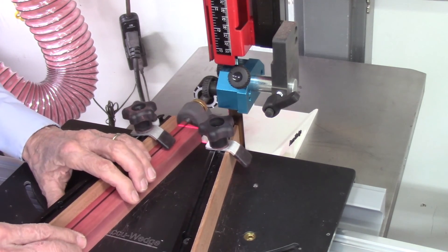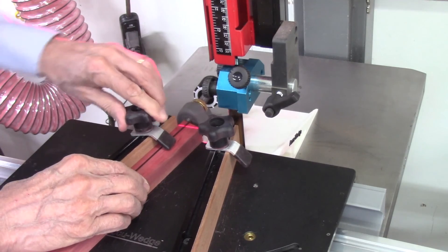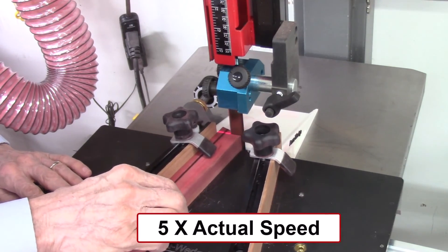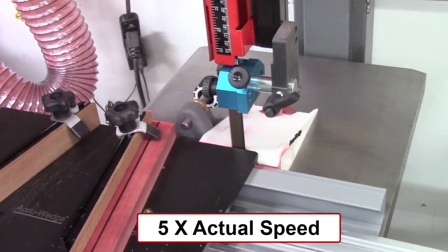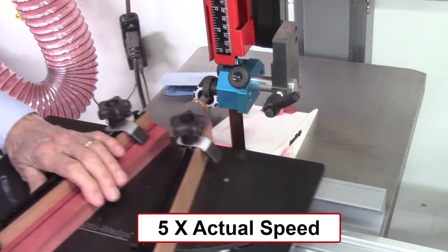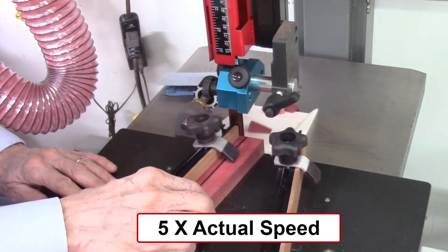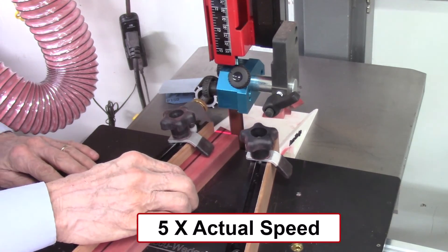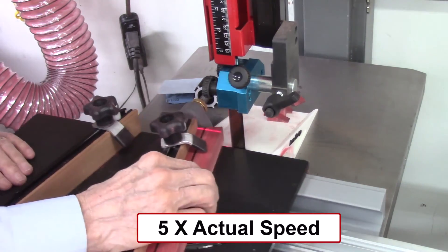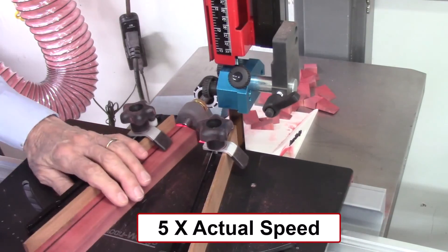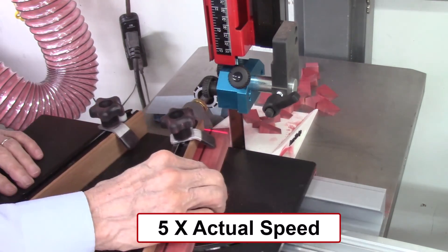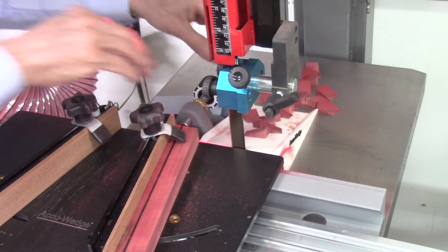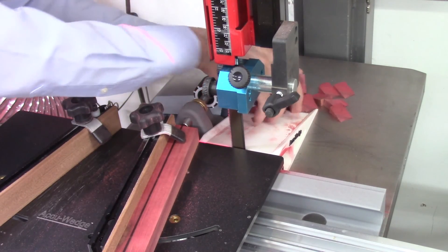So again, I can see the AccuStop, and we'll start cutting, and we'll cut 18 of these. So next I'll go sand the burrs and fuzzies off of these, and then we'll sand them and see what they look like.